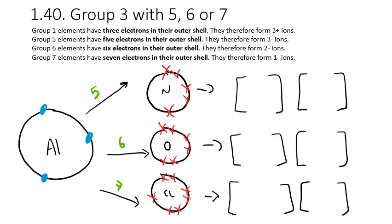Finally, group 3 bonding with groups 5, 6, or 7. Aluminium has 3 in the outer shell and loses 3 electrons to form a 3+ ion. When it bonds with nitrogen it's nice and easy — 1 to 1 — because nitrogen forms a 3- ion. The aluminium 3+ ion has 8 electrons in its outer shell: it was 2, 8, 3 and lost those 3, so now it's just 2, 8. The nitrogen, having 5 to start with, gains 3 electrons from the aluminium.